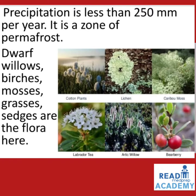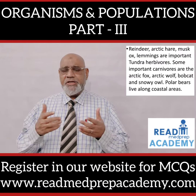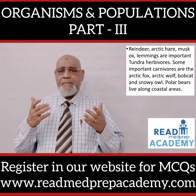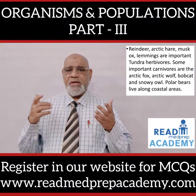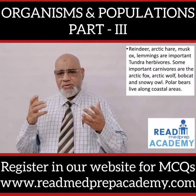Dwarf willows, birches, mosses, grasses, and sedges are the flora here. Common tundra plants include cotton plants, lichen, caribou moss, labrador tea, arctic willow, and bear berry. Reindeer, arctic hare, musk ox, and lemmings are important tundra herbivores. Some important carnivores are the arctic fox, arctic wolf, bobcat, and snowy owl. Polar bears live along the coastal areas.